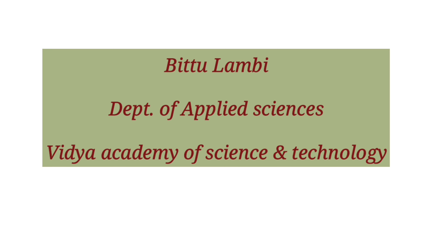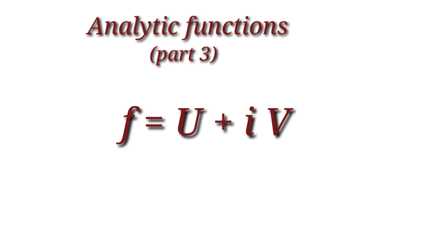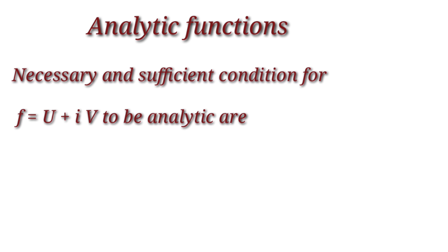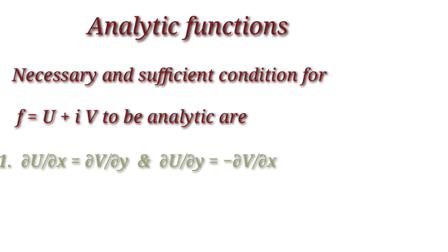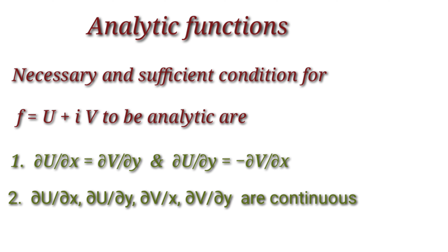Welcome to the third part of analytic functions. We know all complex functions can be expressed in the form f = u + iv. The necessary and sufficient conditions for f = u + iv to be analytic are: condition one, ∂u/∂x = ∂v/∂y and ∂u/∂y = −∂v/∂x; and condition two, the partial derivatives ∂u/∂x, ∂u/∂y, ∂v/∂x, and ∂v/∂y are continuous.